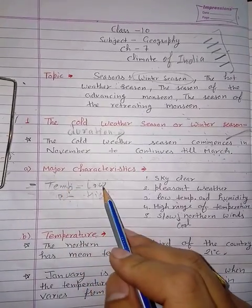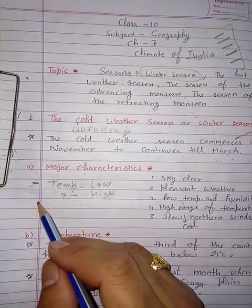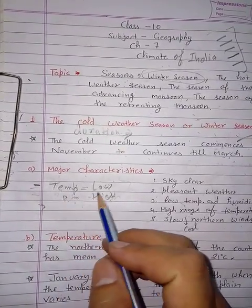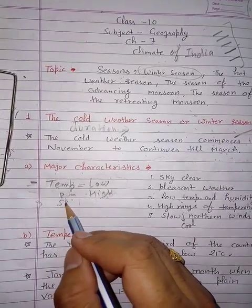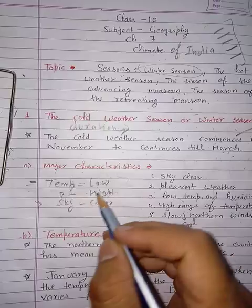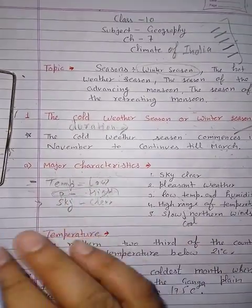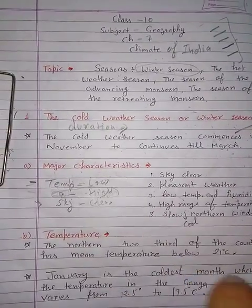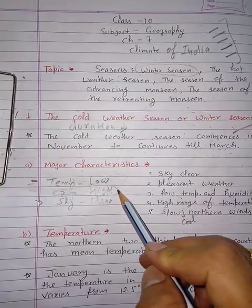During the winter season, temperature is low and pressure is high. When pressure is high, your weather is clear and wind moves slowly. If pressure is low, wind moves fast. So during winter, wind speed is slow.